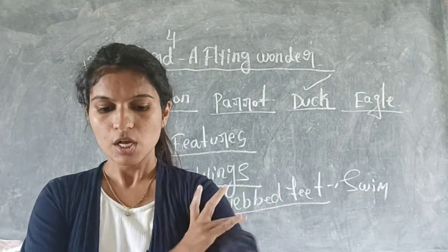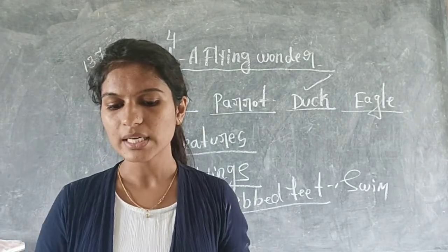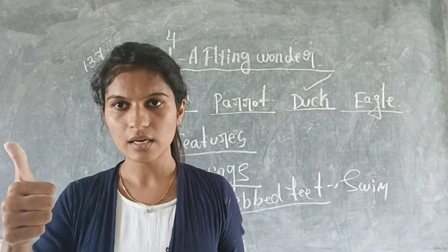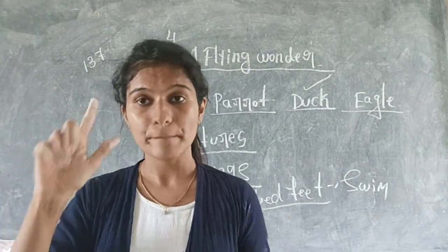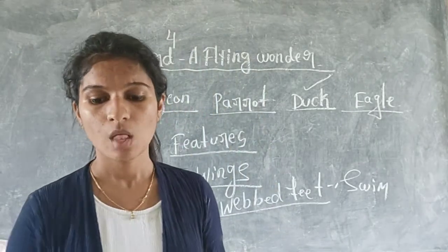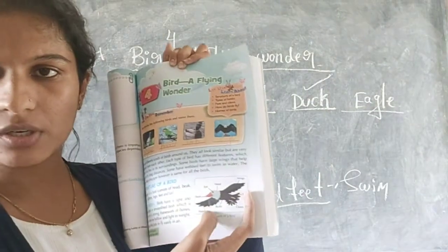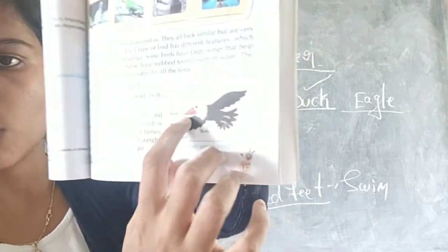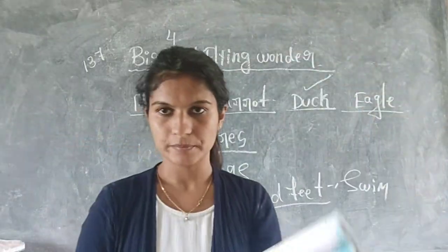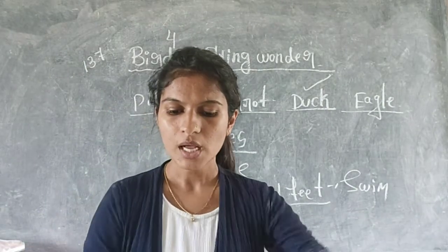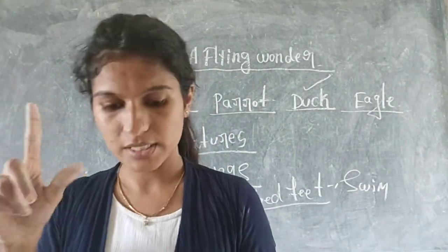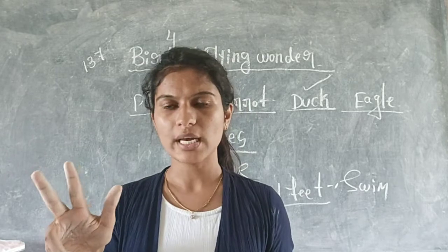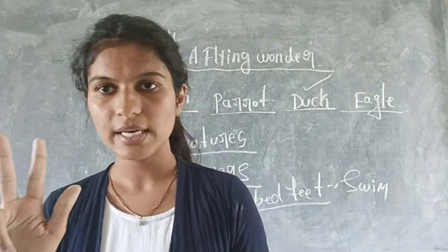Let's see the structure of a bird. The body of a bird consists of a head, and a beak. You can see in this picture a long red color part - that is called the beak. All birds have wings, and wings are compulsory - that is common in all birds.